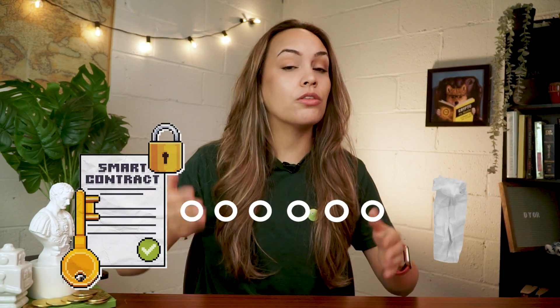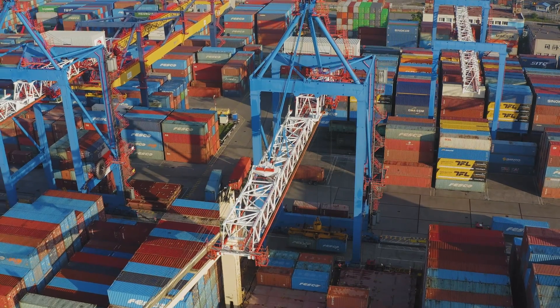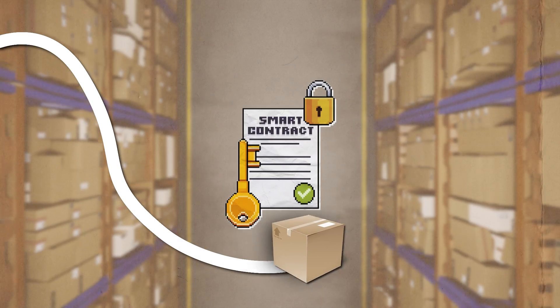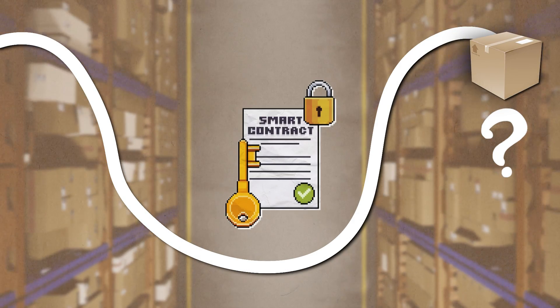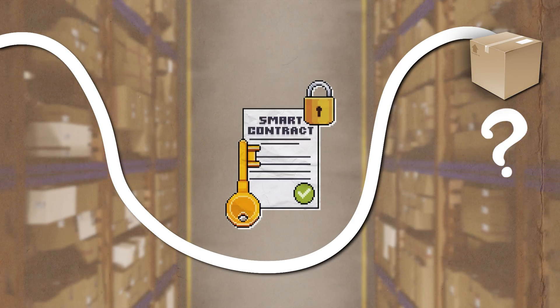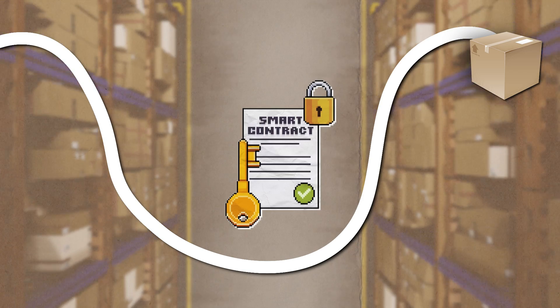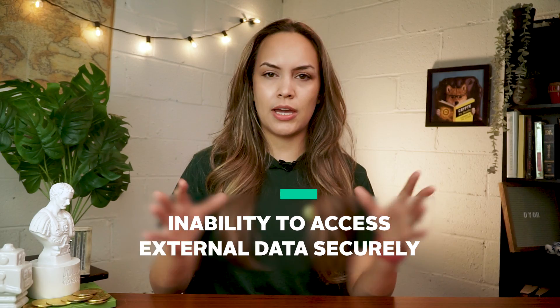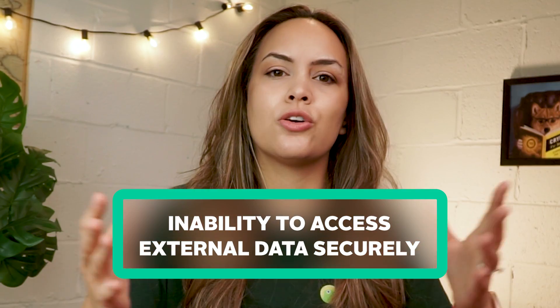However, there is a catch. This isolation creates a challenge for smart contracts to truly unlock their potential. Many smart contracts need to connect with the real world. Imagine a supply chain management smart contract — it can track the movement of goods within the blockchain, but it can't verify if the goods physically arrived at their destination without external data like sensor readings or tracking information.